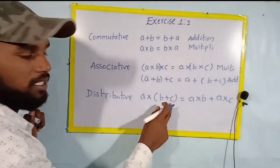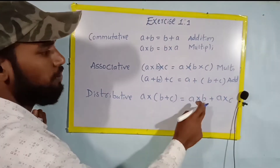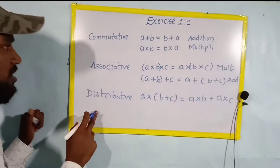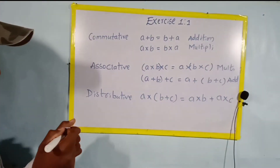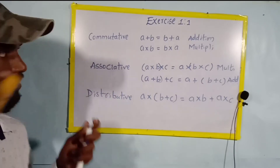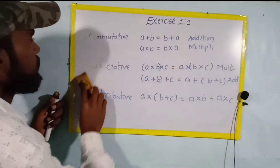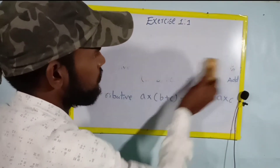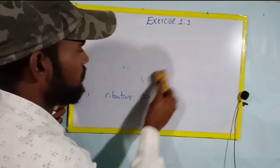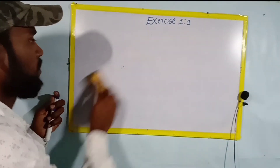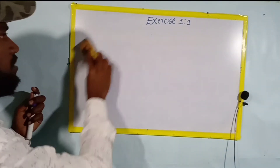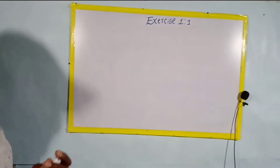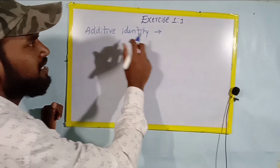Now the distributive property: a into the quantity b plus c is equal to a into b plus a into c. This is the distributive property.